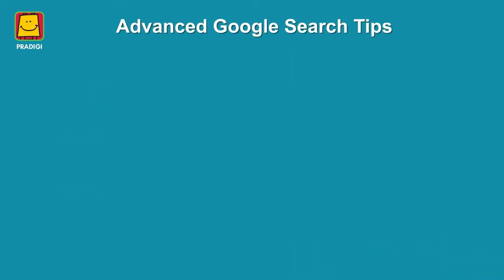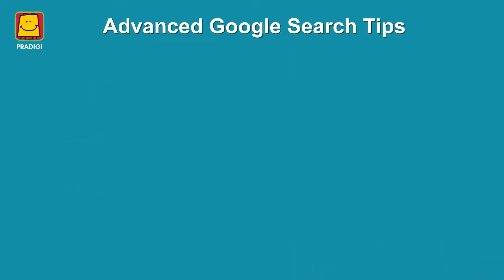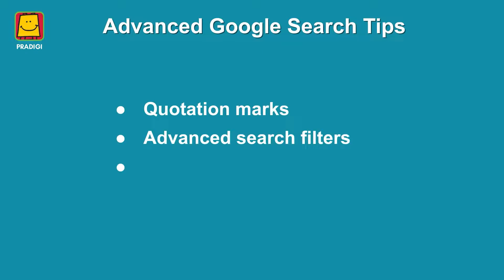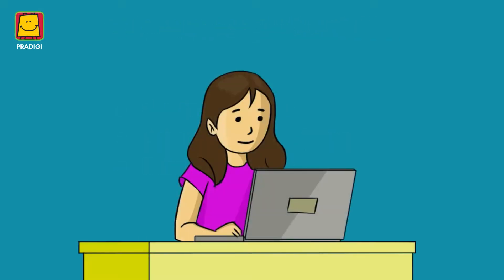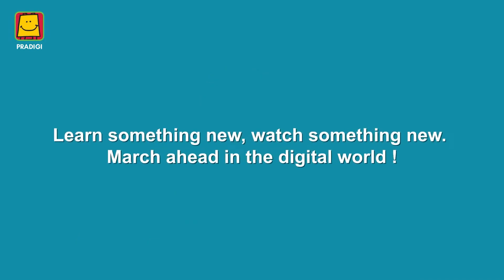So, young learners, advanced search tips like using quotation marks for exact search results, utilizing search filters, and using search operators can help you find relevant and accurate information. Remember, use Google search responsibly and verify information from reliable sources. Happy searching! Learn something new, watch something new. March ahead in the digital world.